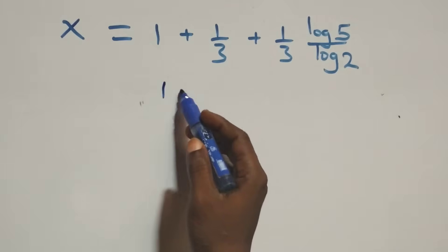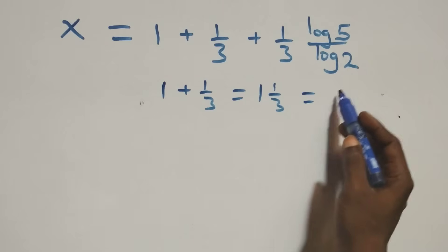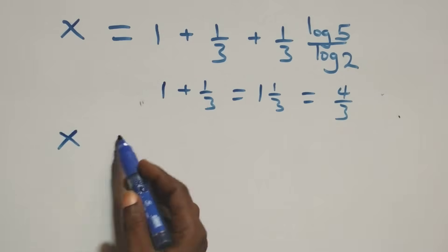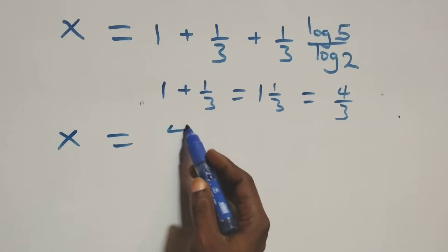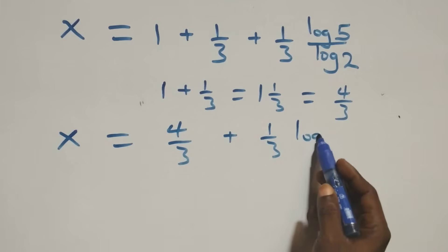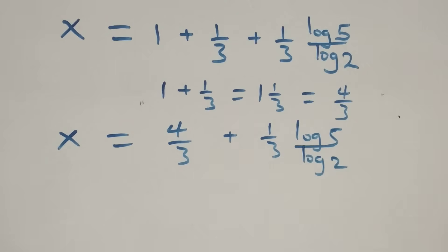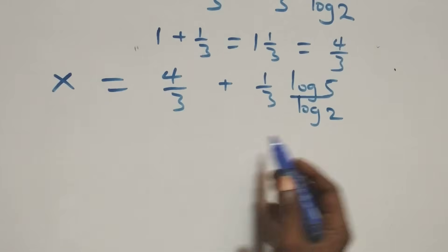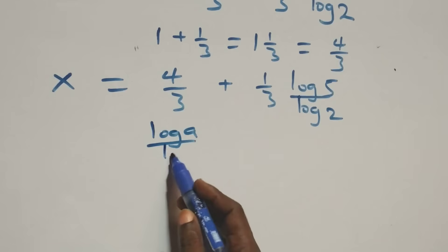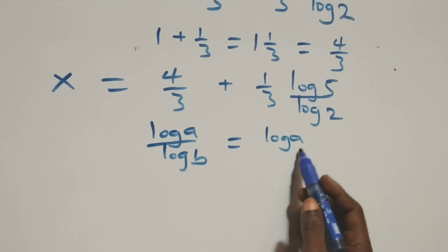So x equals 1 plus 1/3 plus (1/3)·(log 5 over log 2). Now 1 plus 1/3 equals 4/3. Then we apply the change of base rule: log a over log b equals log a to base b.